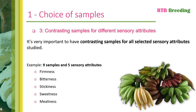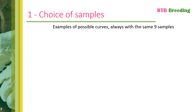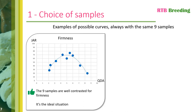After choosing the number of samples to study, the second important point is to choose samples that are contrasting for all the sensory attributes you want to study. Here is another fictitious example: you decide to work with nine different samples and to study five sensory attributes — firmness, bitterness, stickiness, sweetness and milliness. Once you've carried out the QDA analysis and the consumer test with the nine samples and five sensory attributes, you can obtain different types of curves depending on the sensory attributes. The first example is firmness — our ideal situation. The nine samples are well contrasted, giving a nice bell-shaped curve, and it's easy to determine the threshold of acceptability.